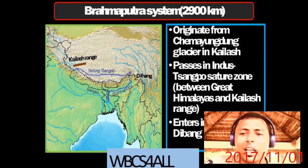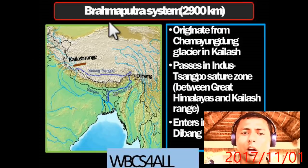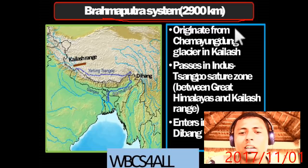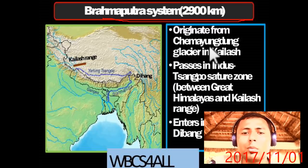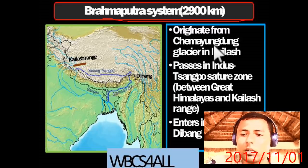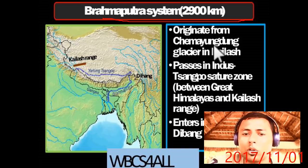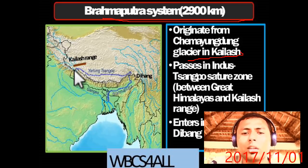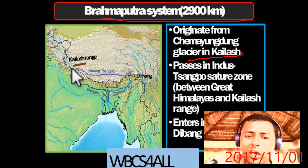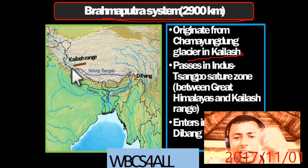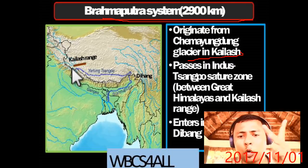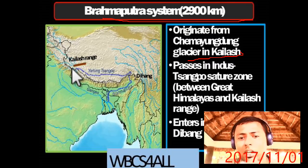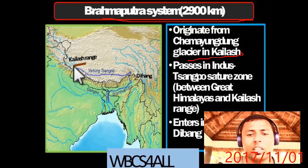The Brahmaputra is one of the longest rivers of the world. Its length is 2,900 km. It originated from the Chemayungdung glacier in the Kailash Mansarovar region — it originated from Tibet. Indus, Brahmaputra, and Sutlej are the antecedent rivers; they do not have their origin within India.